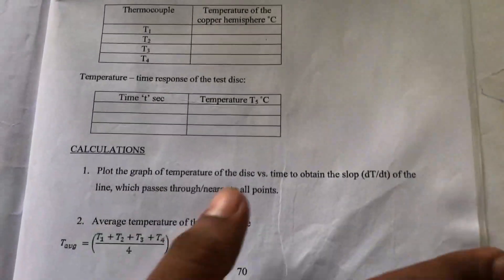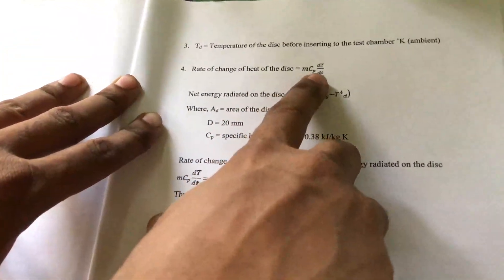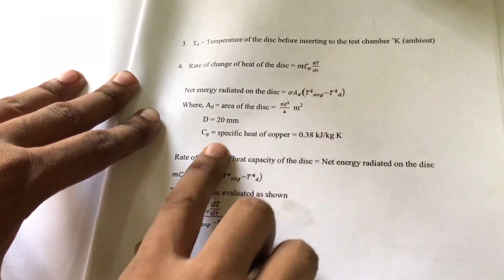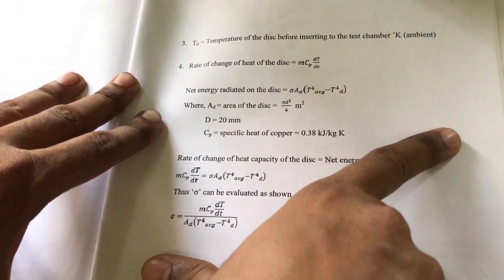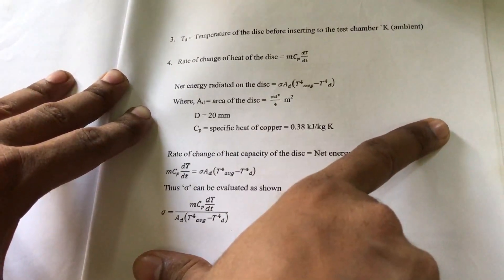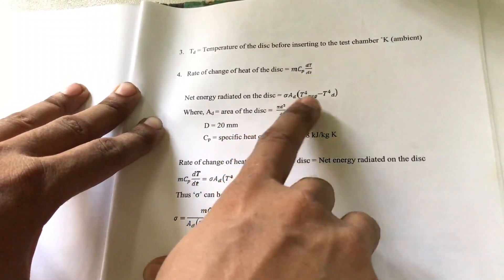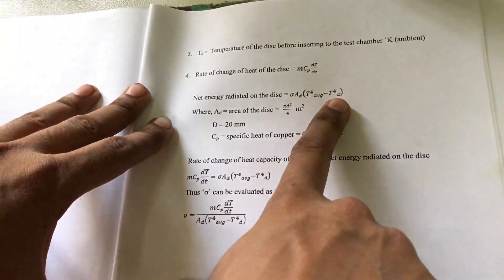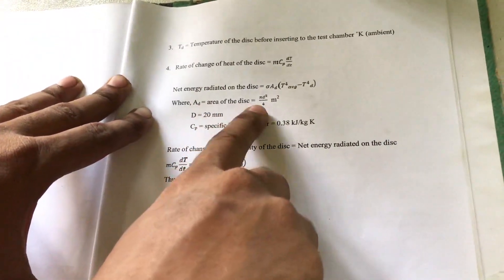The governing equation is: rate of change of heat equals M × CP × dT/dt. The net energy radiated by the disk is sigma × A_D × (T_average⁴ − T_D⁴), where A_D is the area of the disk, T_average is the average hemisphere temperature, and T_D is the disk temperature.